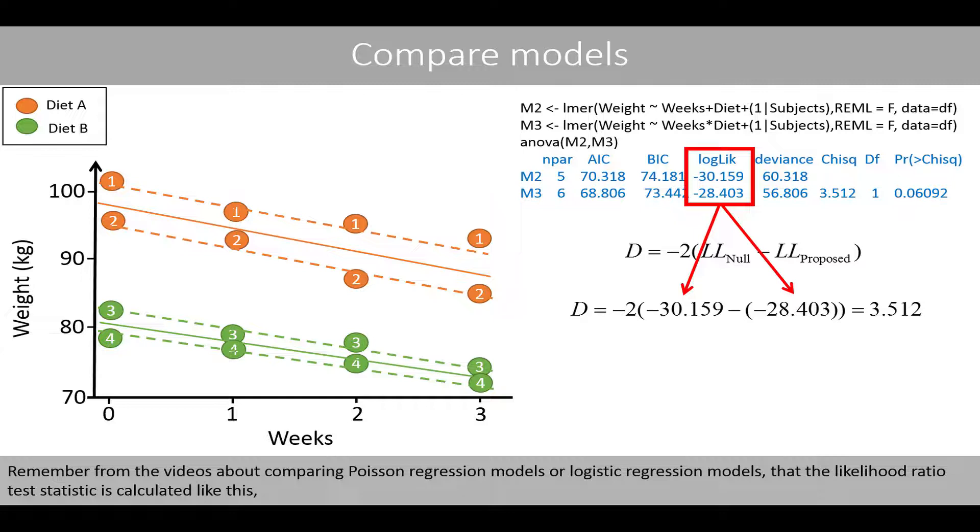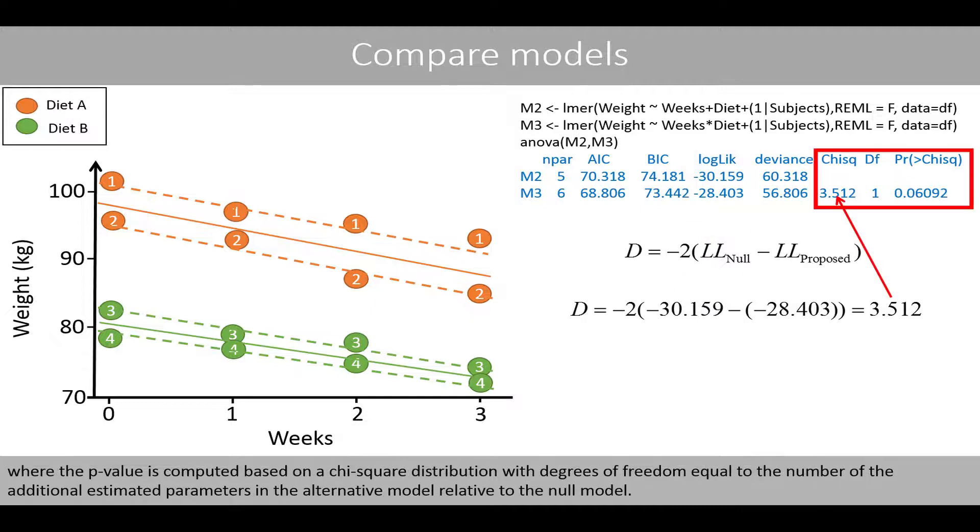Remember from the videos about comparing Poisson regression models or logistic regression models, that the likelihood ratio test statistic is calculated like this. The p-value is calculated based on a chi-square distribution, with degrees of freedom equal to the number of additionally estimated parameters in the alternative model relative to the null model.